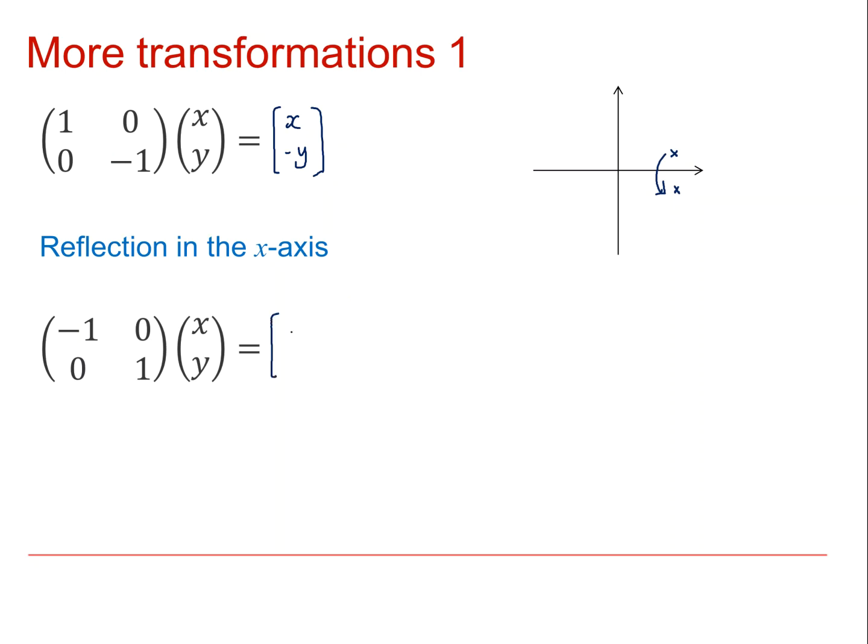The second matrix transforms the point x, y onto the point minus x, y. Here we can see that for our general point, the x coordinate becomes negative and the y coordinate remains the same. We have a reflection in the y axis.